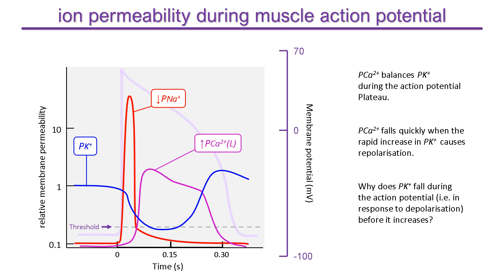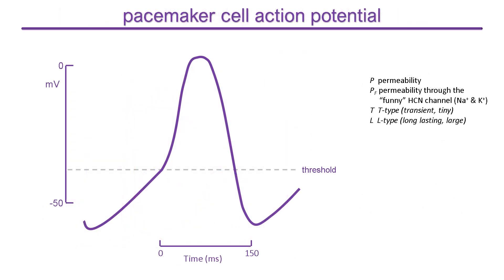Now we will consider the ion permeability changes during an action potential in the sinoatrial node. This is the action potential of a pacemaker cell. Similar waveforms are recorded in sinoatrial and atrioventricular node cells. There is no resting potential, so we will start at the lowest point of the action potential. As in muscle cells, the membrane is permeable to potassium, and the basal flux of potassium generates a negative membrane potential. The membrane potential never becomes as negative as in muscle cells though, because the potassium flux is opposed by sodium flux through a non-selective cation channel known as the HCN or funny channel.